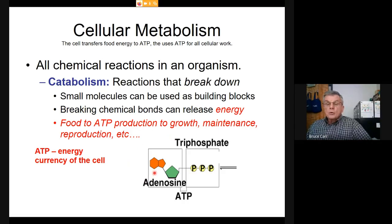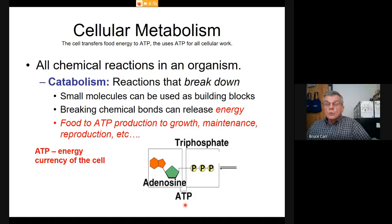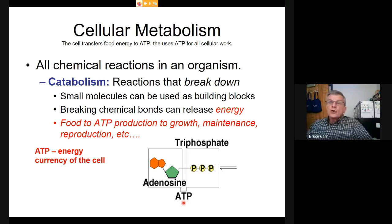Energy is captured by this molecule: adenosine triphosphate. Here is a sugar, here is an organic base—in this case adenine—and here is a chain of phosphate groups that forms what we call ATP. ATP is sort of the transfer device, just like money is how we transfer our work into purchasing the things we need.